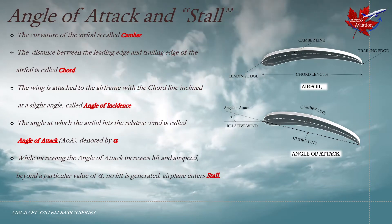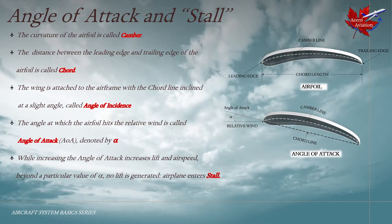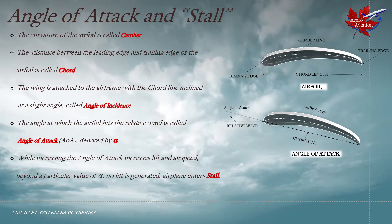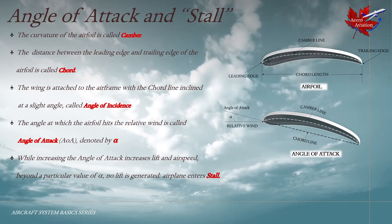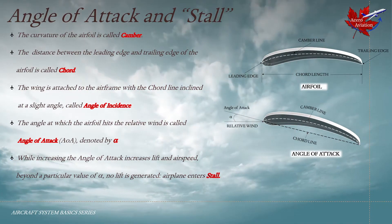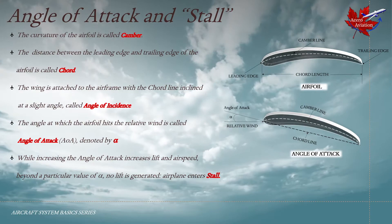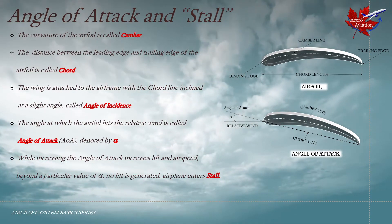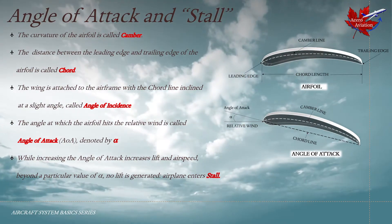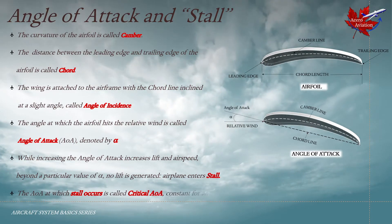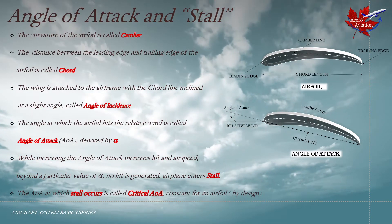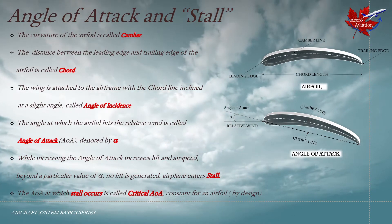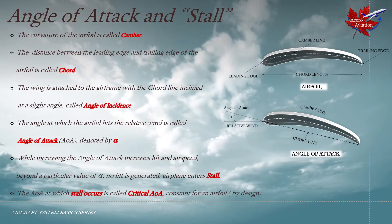While increasing the angle of attack increases lift, beyond a particular value of alpha no lift is generated and the airplane enters what is called stall. Stall is caused by separation of airflow from the wing's upper surface. For a given airplane, stall always occurs at the same angle of attack regardless of the airspeed, flight attitude, or weight of the airplane. The angle of attack at which stall occurs is called the critical angle of attack or stalling angle of attack, and it is constant for an airfoil by design.